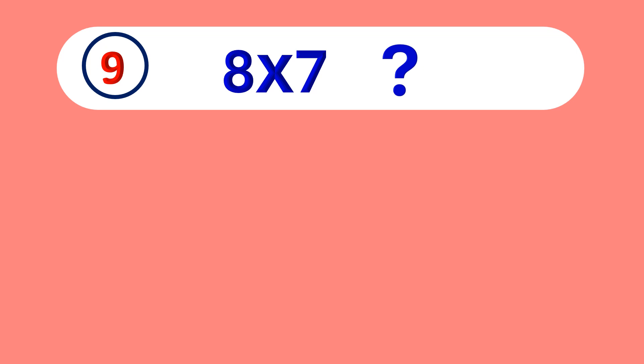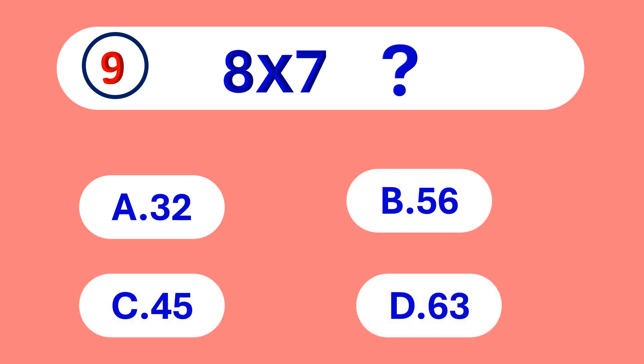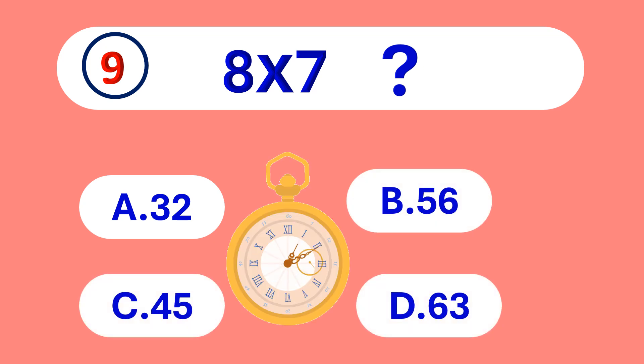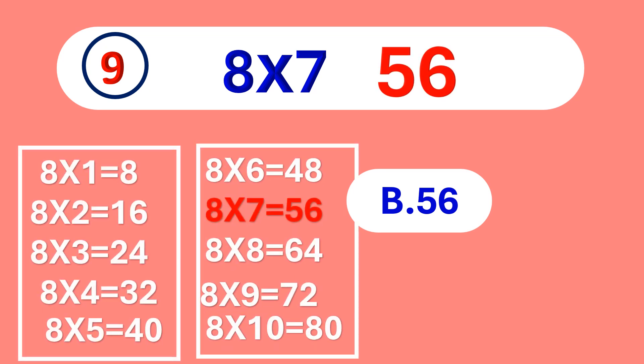8 times 7 is equal to... 56. 8 times 7 is 56.